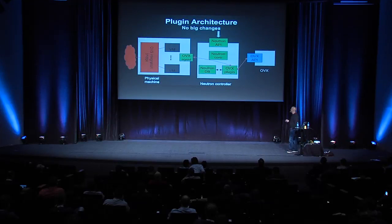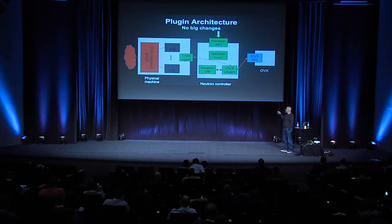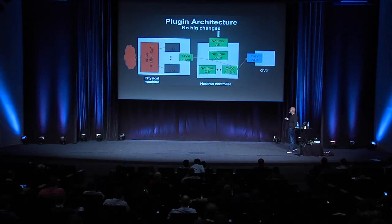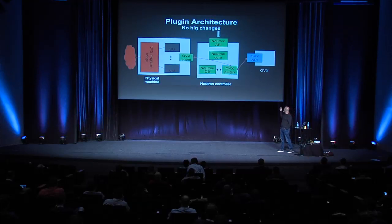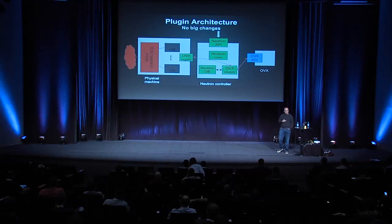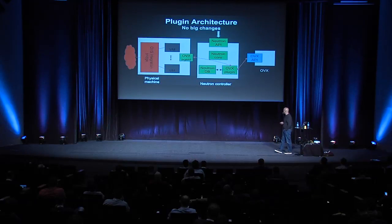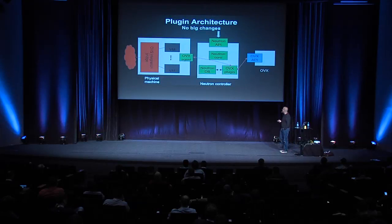This is the plugin architecture. Nothing fundamental has changed — we have the Neutron API, the Neutron plugin speaks to an OVX agent that provisions the OVS integration bridge, and speaks to the OVX API to provision OVX. Nothing fundamental here.